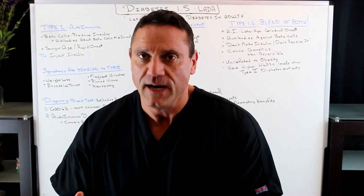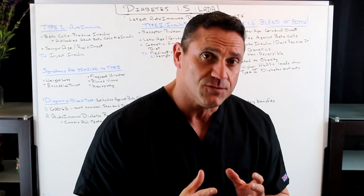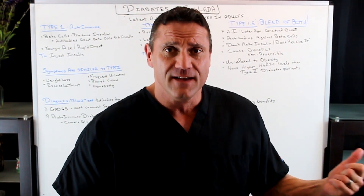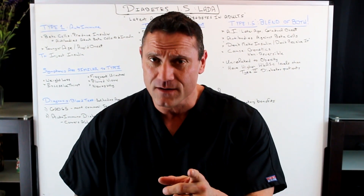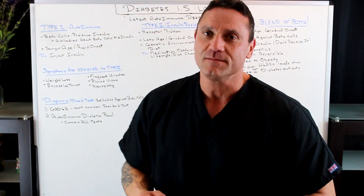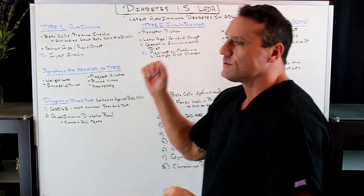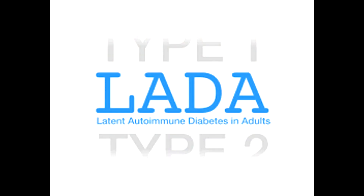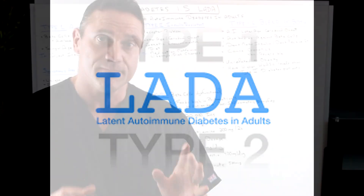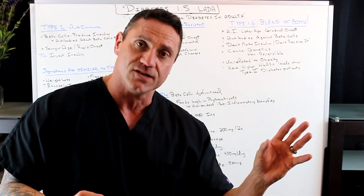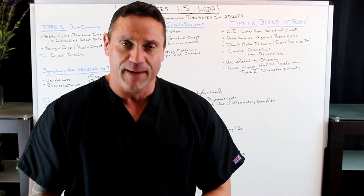We understand what diabetes type 1 is and what diabetes type 2 is, but what the heck is diabetes 1.5? Never heard of that one before — it's very unusual, yet it's more common than you think. Diabetes 1.5 is otherwise known as LADA: Latent Autoimmune Diabetes in Adults. Basically, this is when you're an adult and you become insulin dependent.